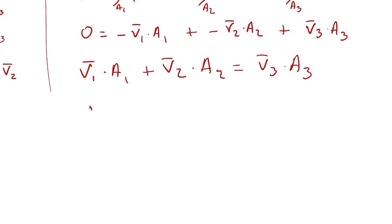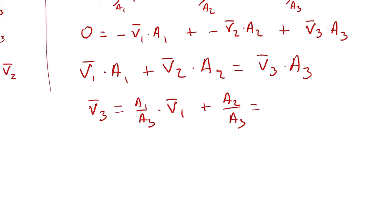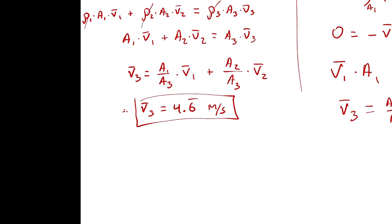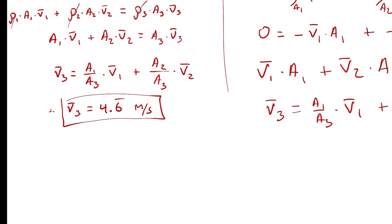Solving for V̄₃ yields: V̄₃ = (A₁/A₃)·V̄₁ + (A₂/A₃)·V̄₂ — which is exactly the same equation as what we derived with the mass balance approach. Neat!